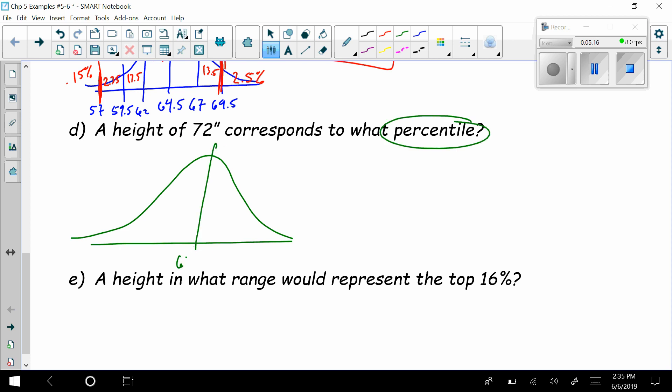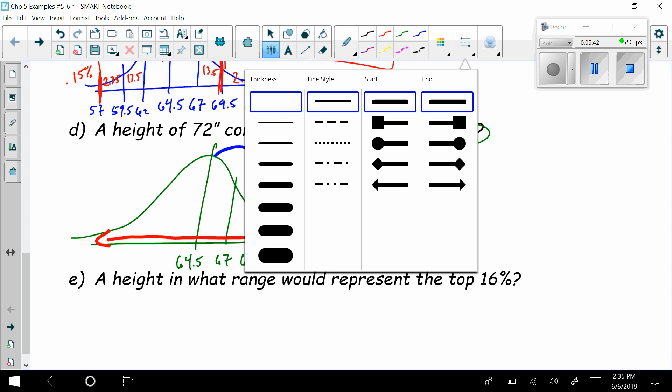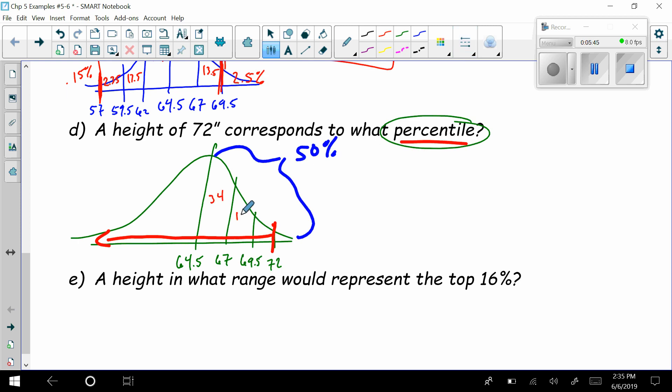Now, it says a height of 72 inches corresponds to what percentile? Well, I know that this is 64.5. This one is at 67. This one is at 69.5. The next one here would be at 72. If it's a percentile, you get 72 in everything down here. Remember that this top spot, all of this, is 50%. Which means that this 34, this 13.5, and this 2.35. If I added that up and took it out of 50, it should only have this 0.15% left, above it.